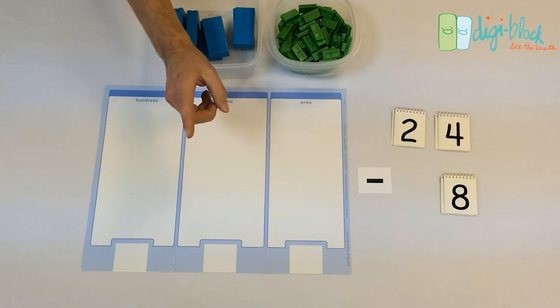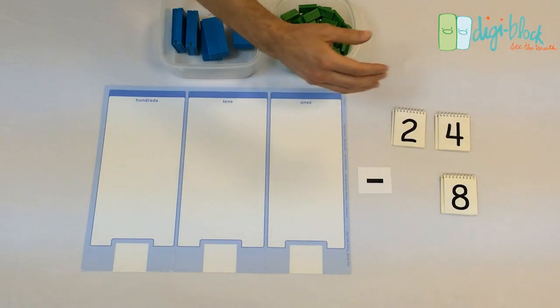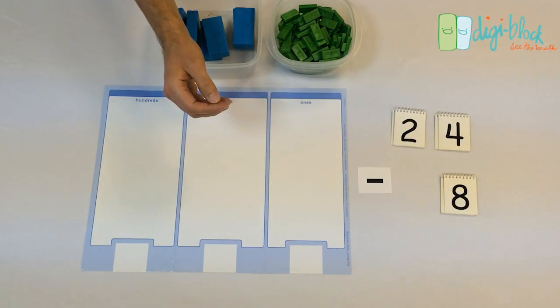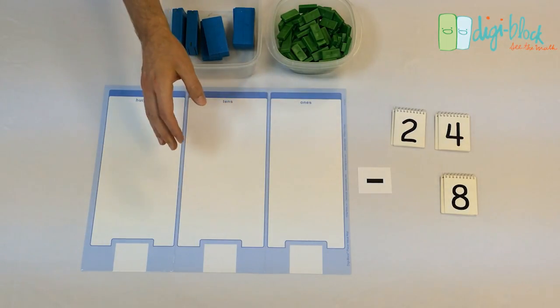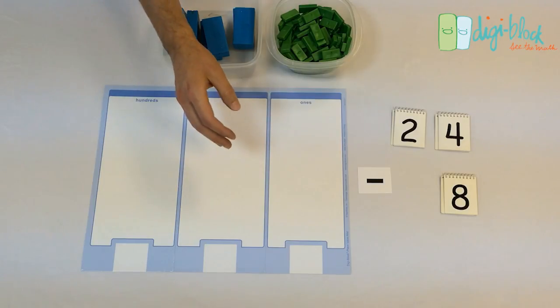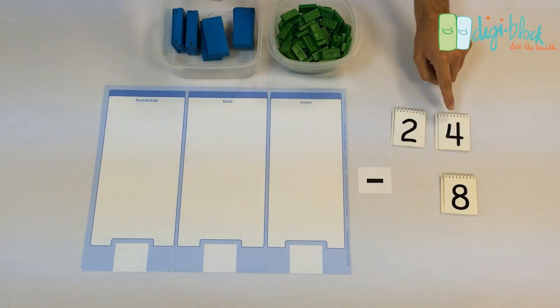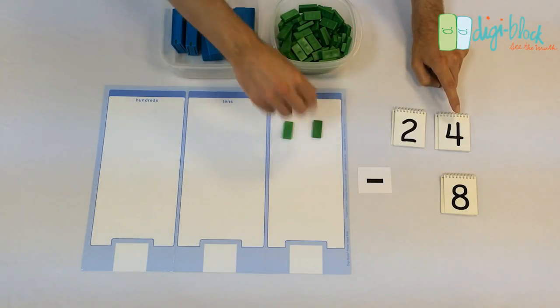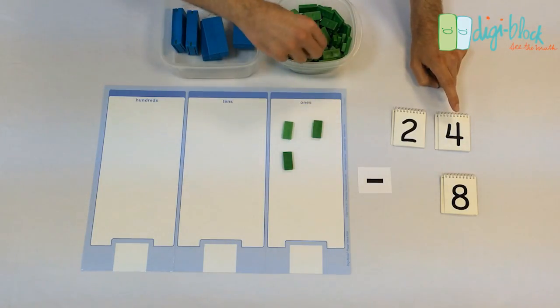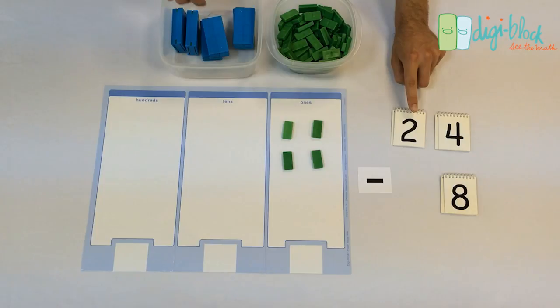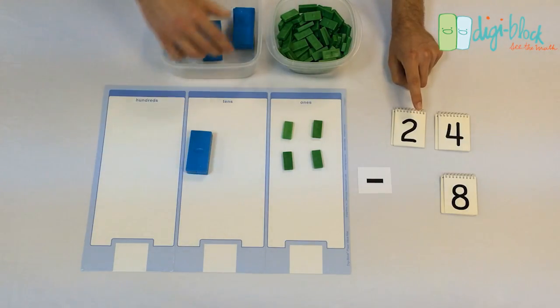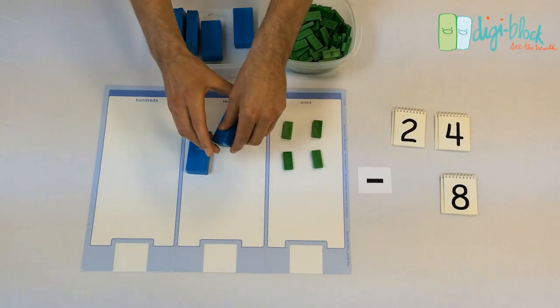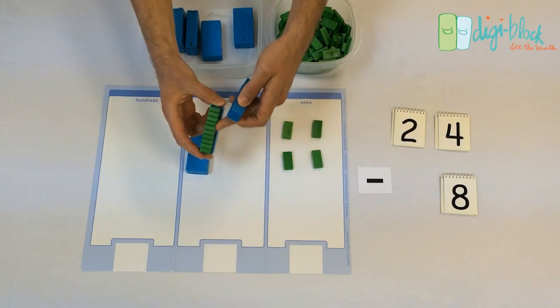The first step should just be building 24. So I would just say, can you build 24 for me with blocks? This is something that your student should already be pretty comfortable with. So 24 has 4 ones, so we take 4 ones blocks, or 4 singles. And it has 2 tens, so we take 2 blocks of 10. Now remember, these tens are awesome because they have 10 ones inside.